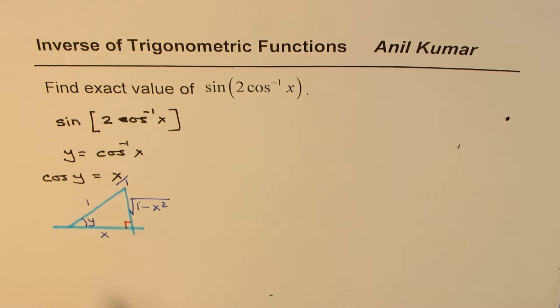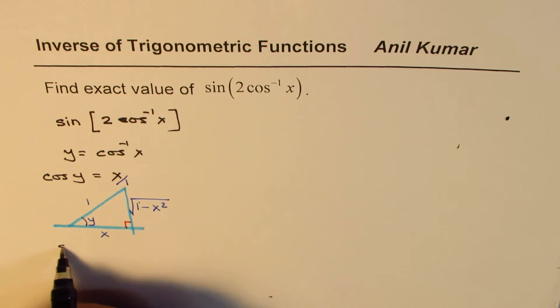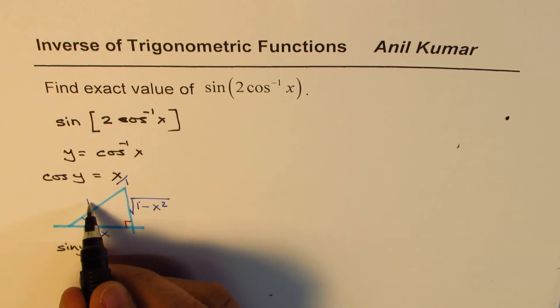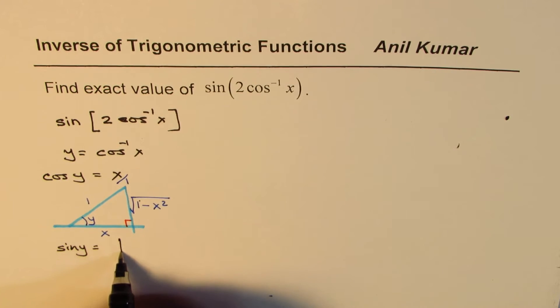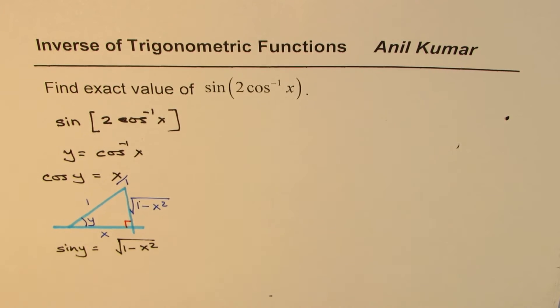So cos y is x. How about sin y? Sin y is opposite over hypotenuse, so it equals √(1 - x²). That's what we get from this substitution.